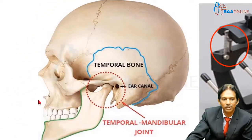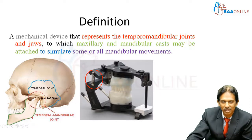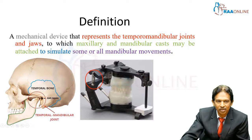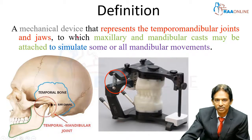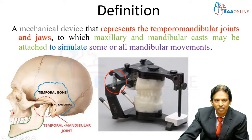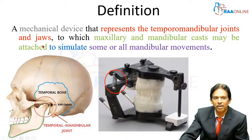In the articulator, this is the upper jaw and this is the lower jaw — referred to as the upper arm and the lower arm. The basal bone of the mandible and the maxilla can be seen in the articulator. In the human body, the basal bone has the alveolar process and teeth. Similarly, here we attach the alveolar process with teeth — the maxillary cast and mandibular cast — which is what the definition means by 'maxillary and mandibular casts may be attached.'